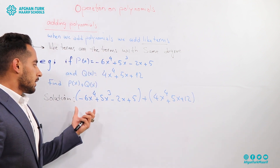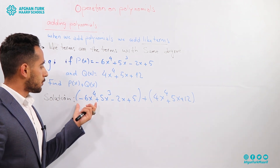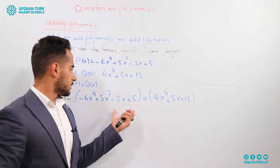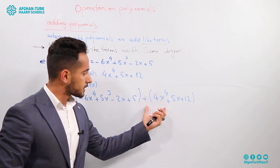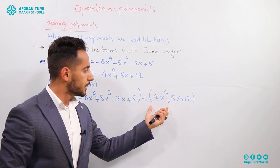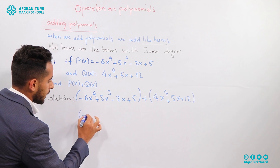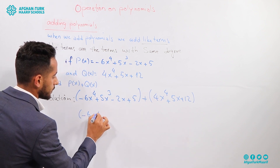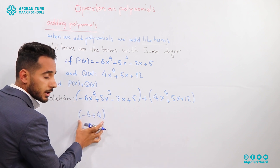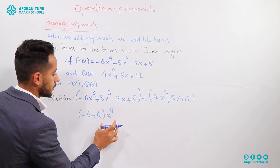We have studied how to calculate the degree of each term. The first term is minus 6x to the power of 4. Let me check if we have another term with the same degree. Yes, in the second polynomial the first term is 4x to the power of 4, so we can add them: minus 6 plus 4, because the degrees are the same — we just add the coefficients — giving x to the power of 4.